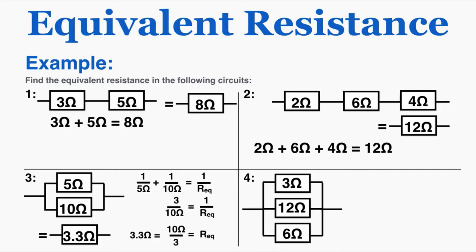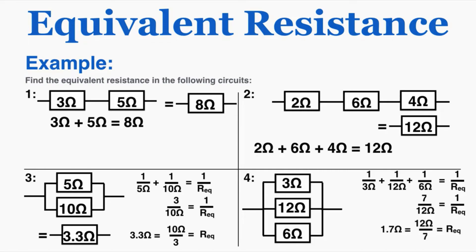A pattern to notice: in series, the total resistance is greater than the individual resistances, whereas in parallel the total resistance is actually less than any individual resistance — it actually becomes easier for current to flow through resistors arranged in parallel. For circuit number four, plugging all three into the parallel equation and solving gives an equivalent resistance of 1.7 ohms.